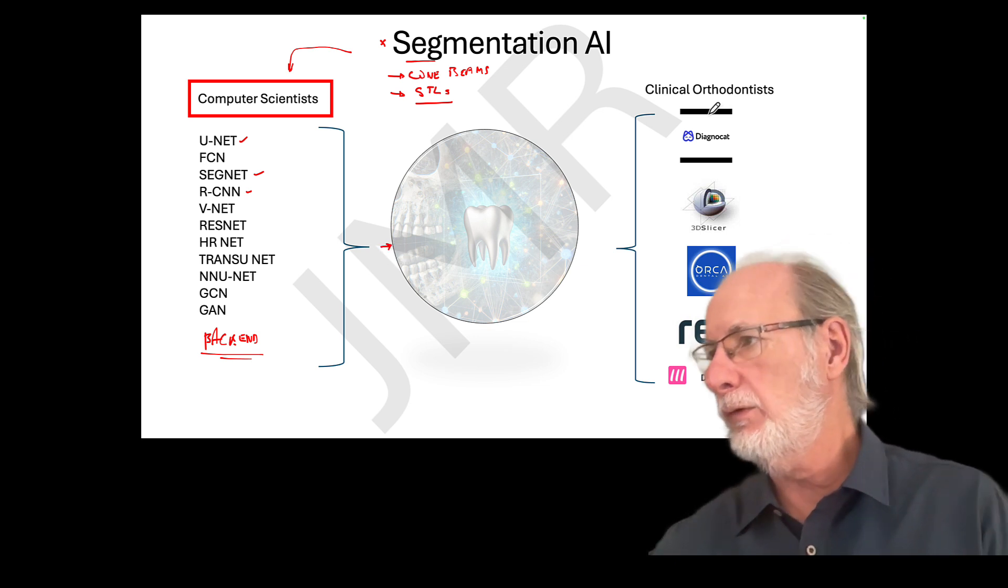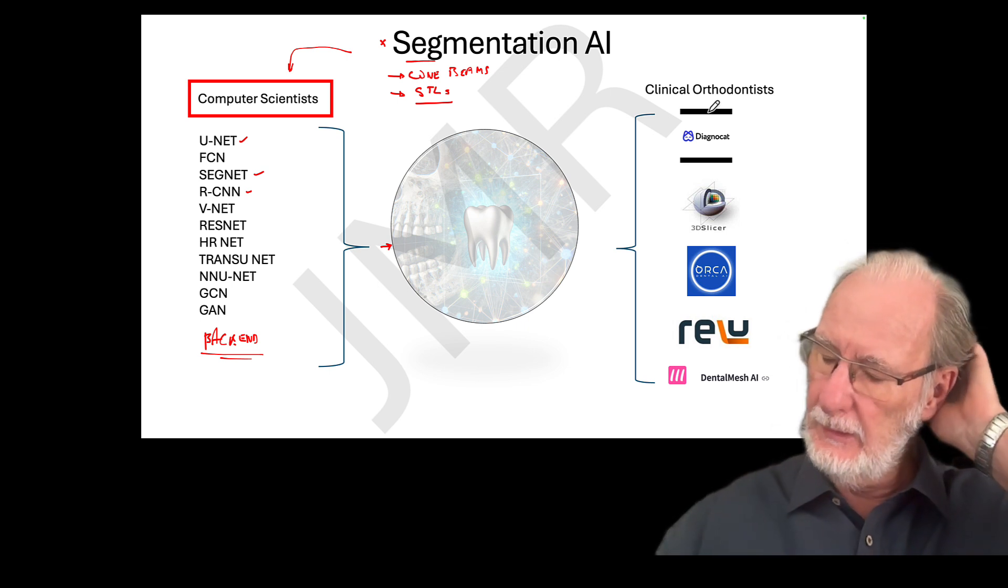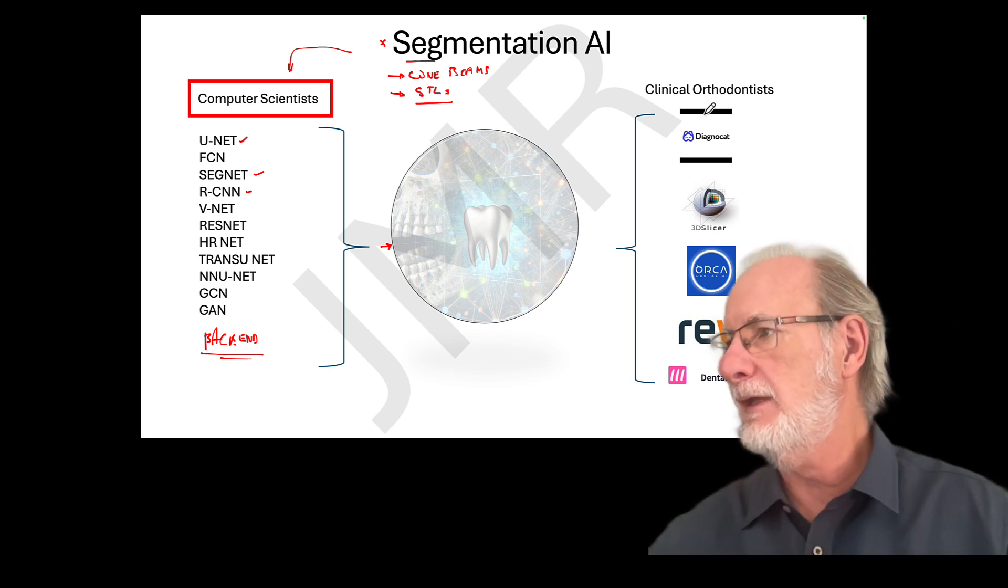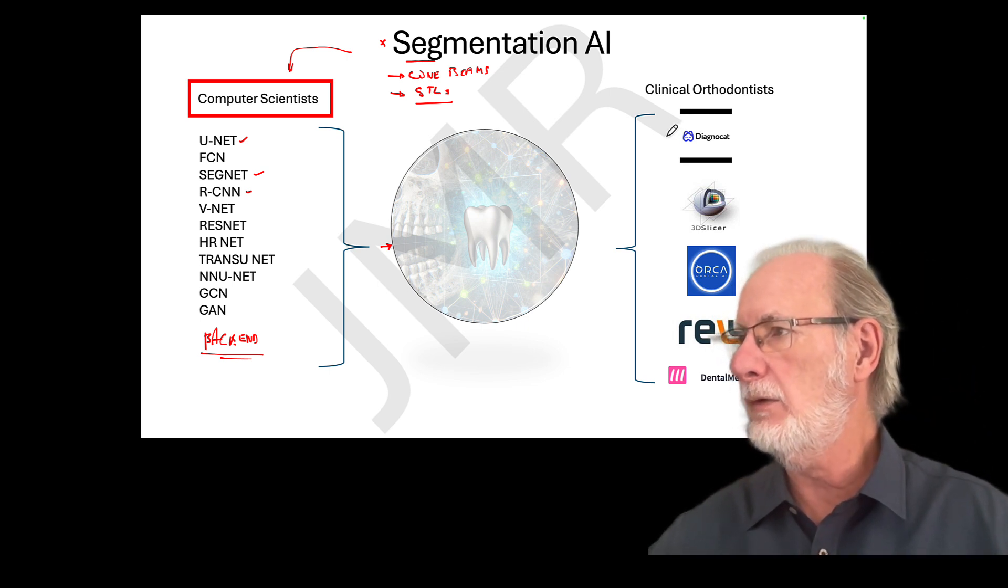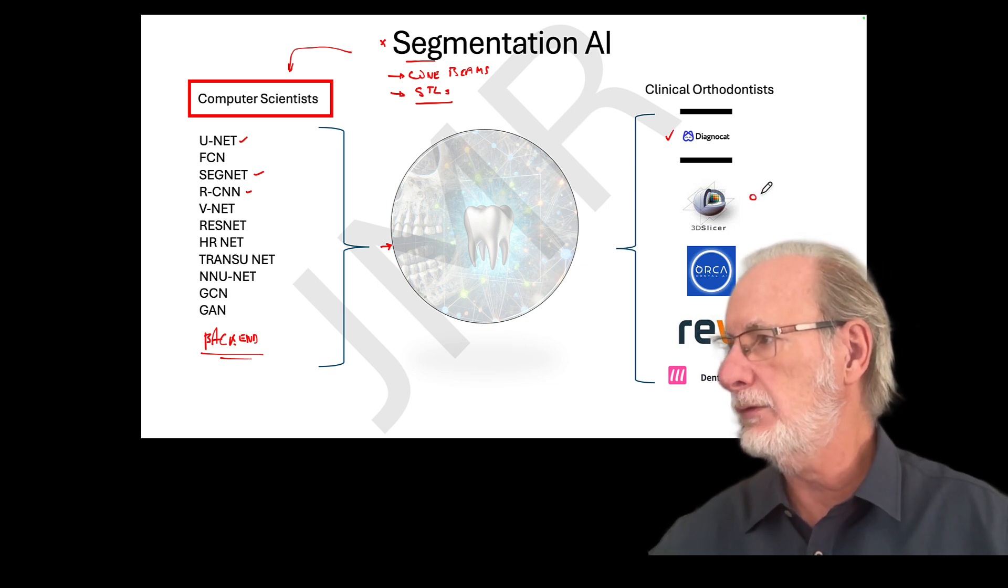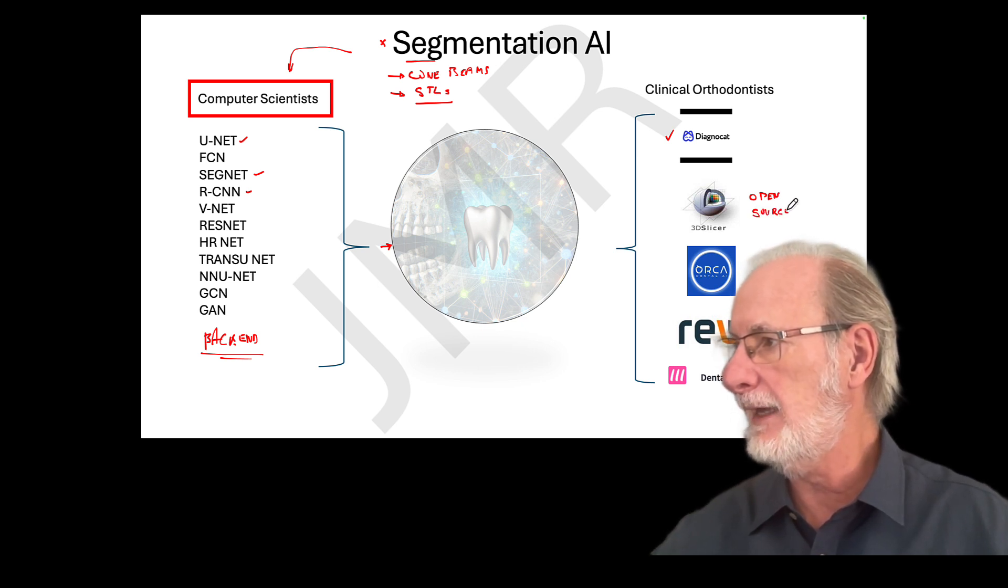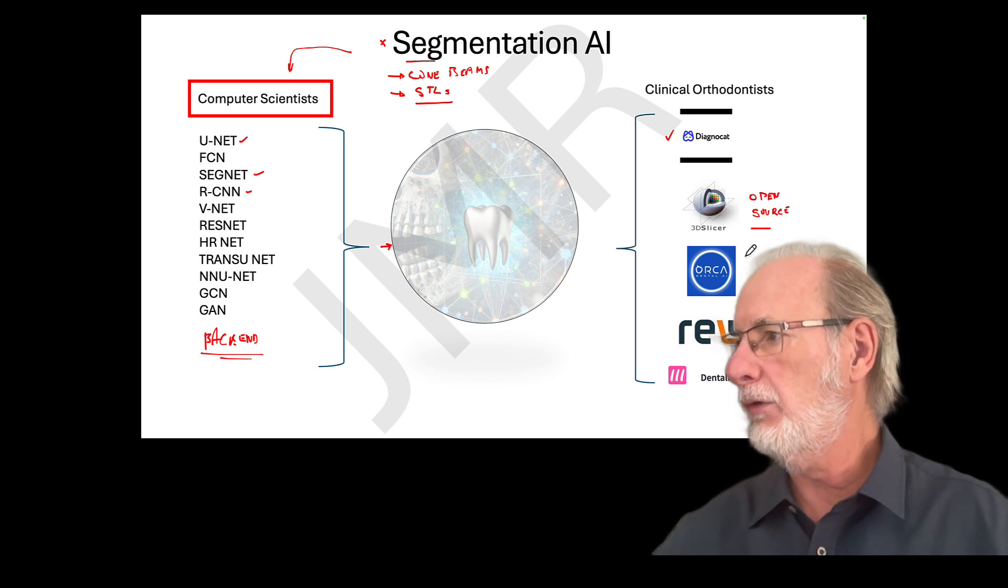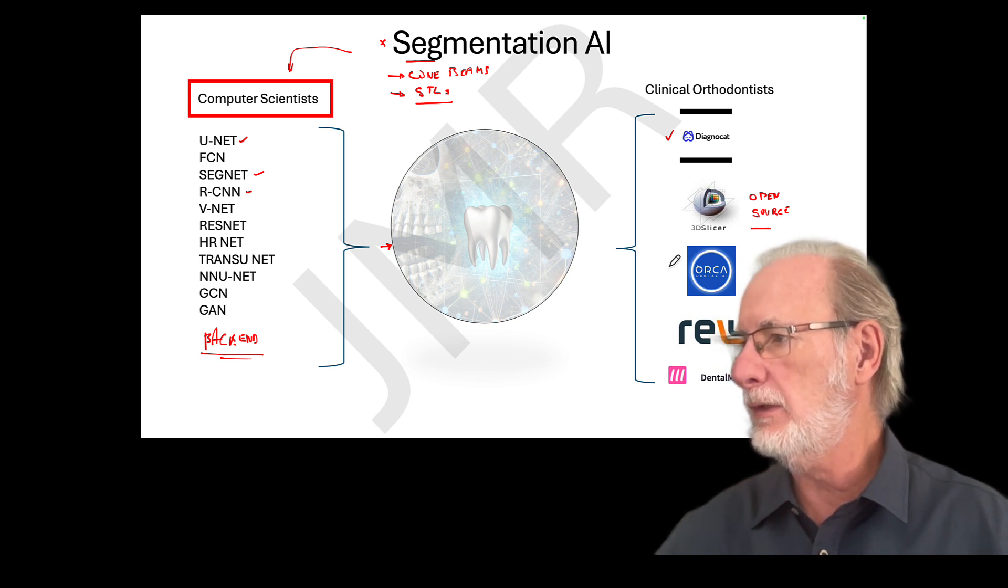But at the moment, we already have tools. And again, I want to emphasize, I don't have any financial interest in any of them, but I use them. We have Diagnocat. That's the first one I use. 3D Slicer is open source, so it doesn't cost anything. It's a very nice software. So that's open source, but it's kind of limited in its segmentation at the moment. You have Orca, which is a new company from Israel.